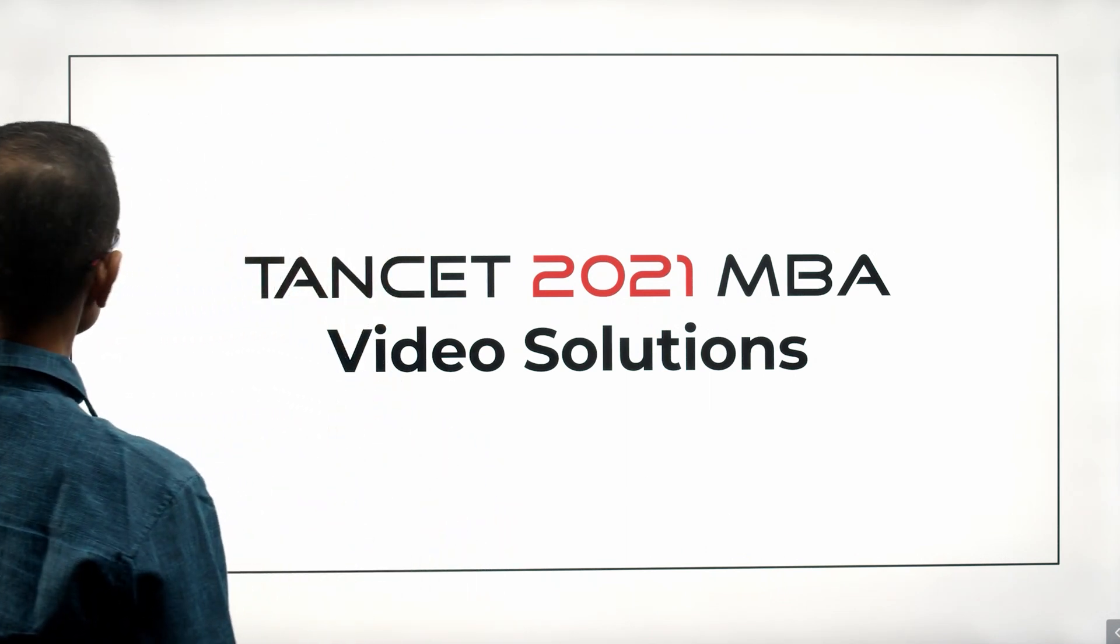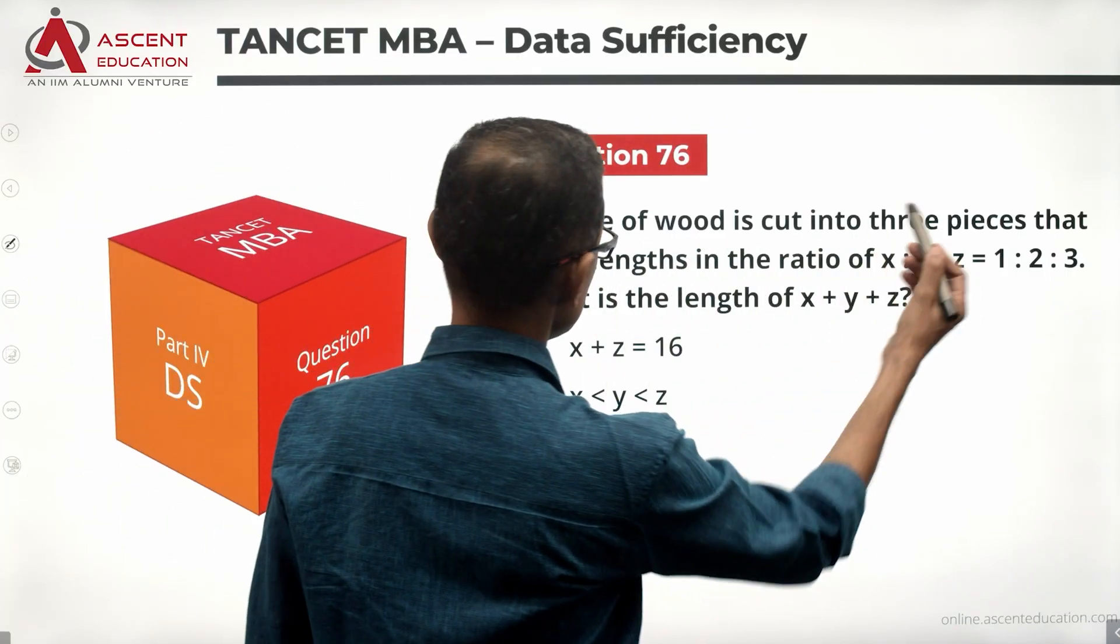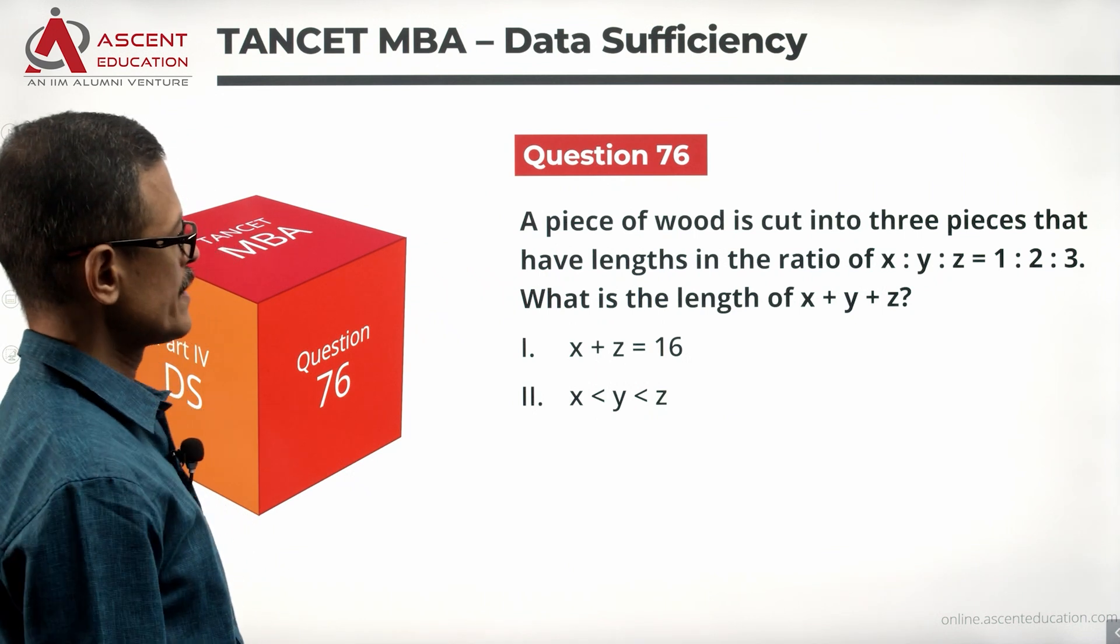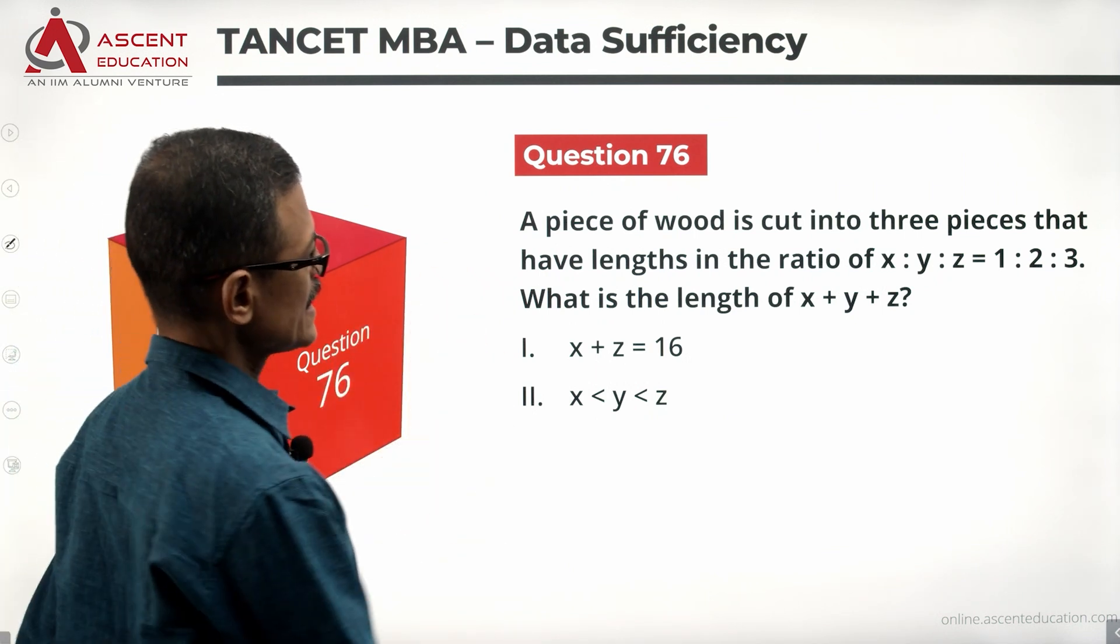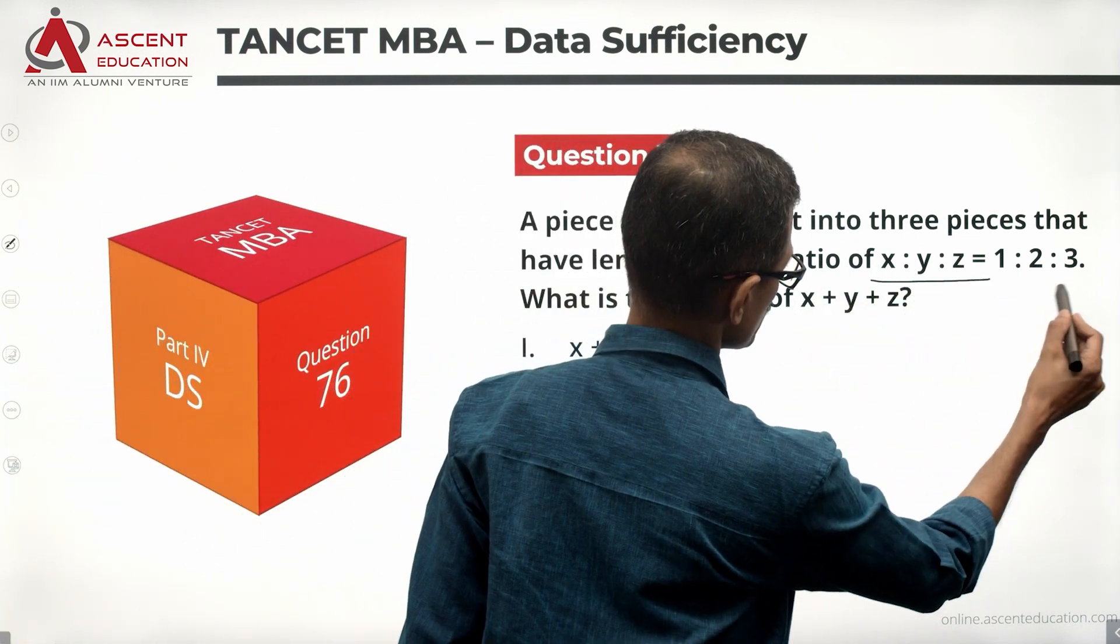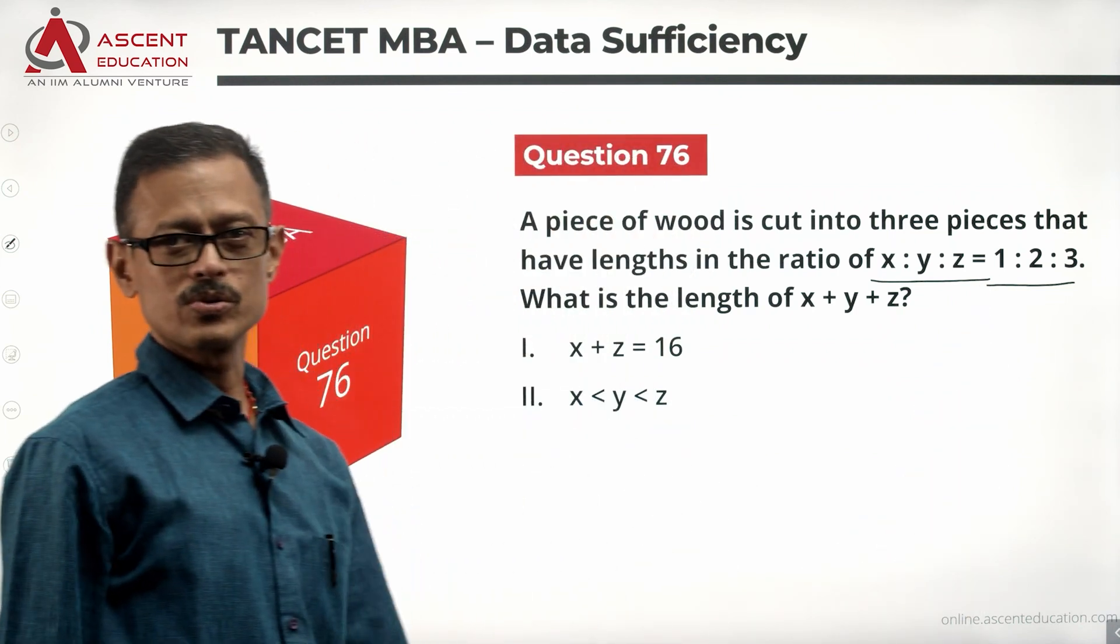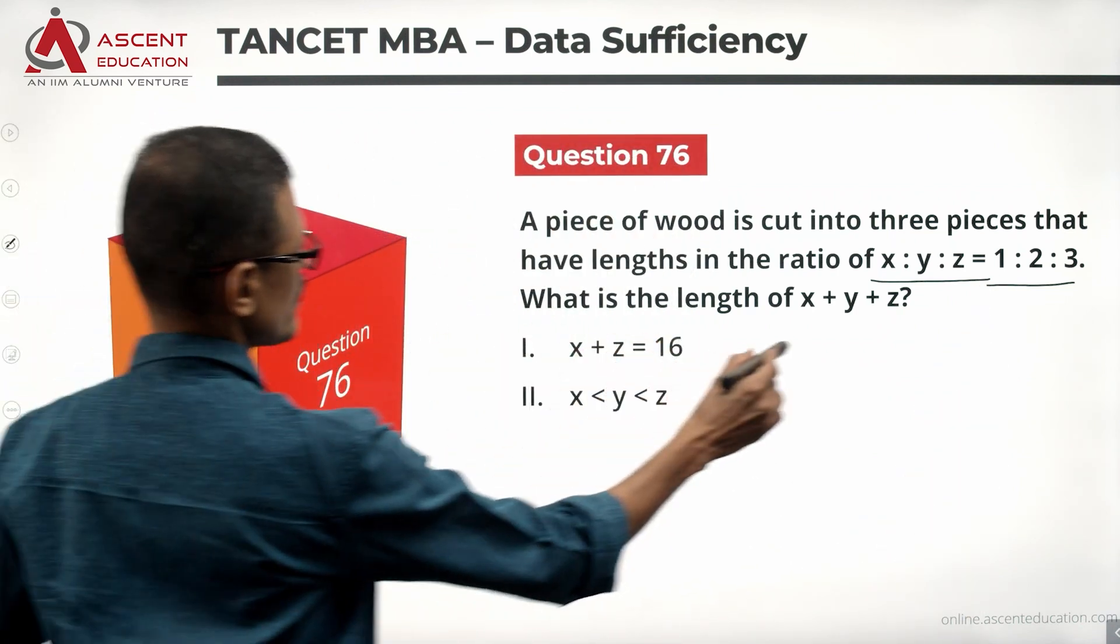Quite a simple question. Take a look at the question. A piece of wood is cut into three pieces that have lengths in the ratio X is to Y is to Z is 1 is to 2 is to 3. What is the length of X plus Y plus Z?